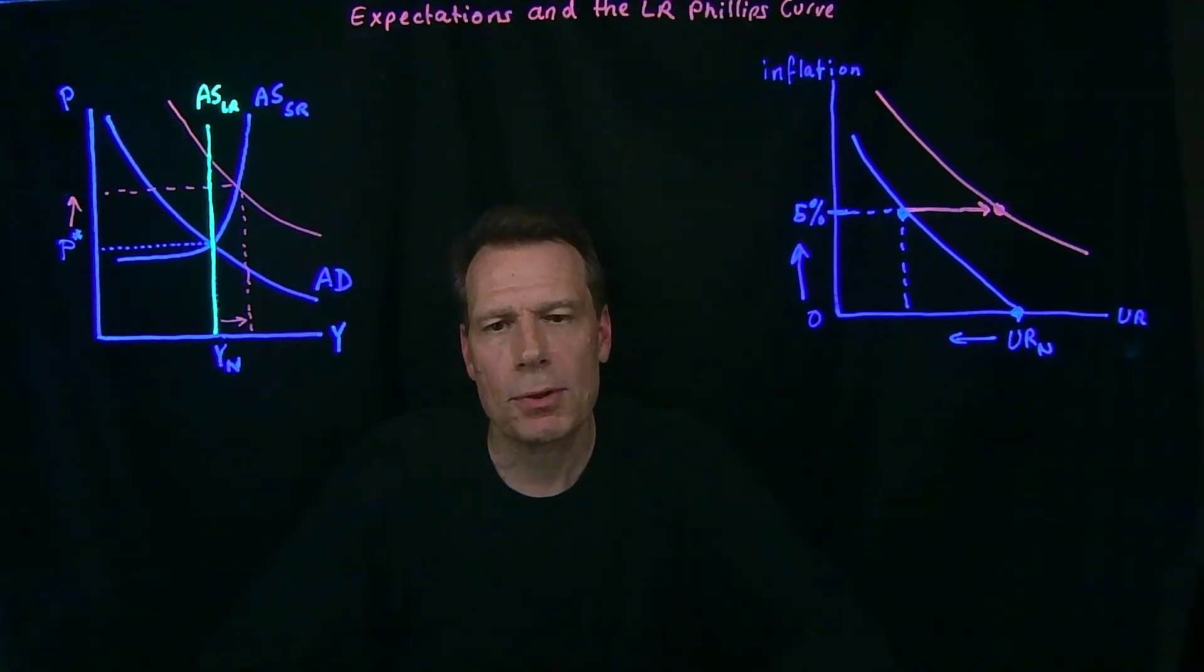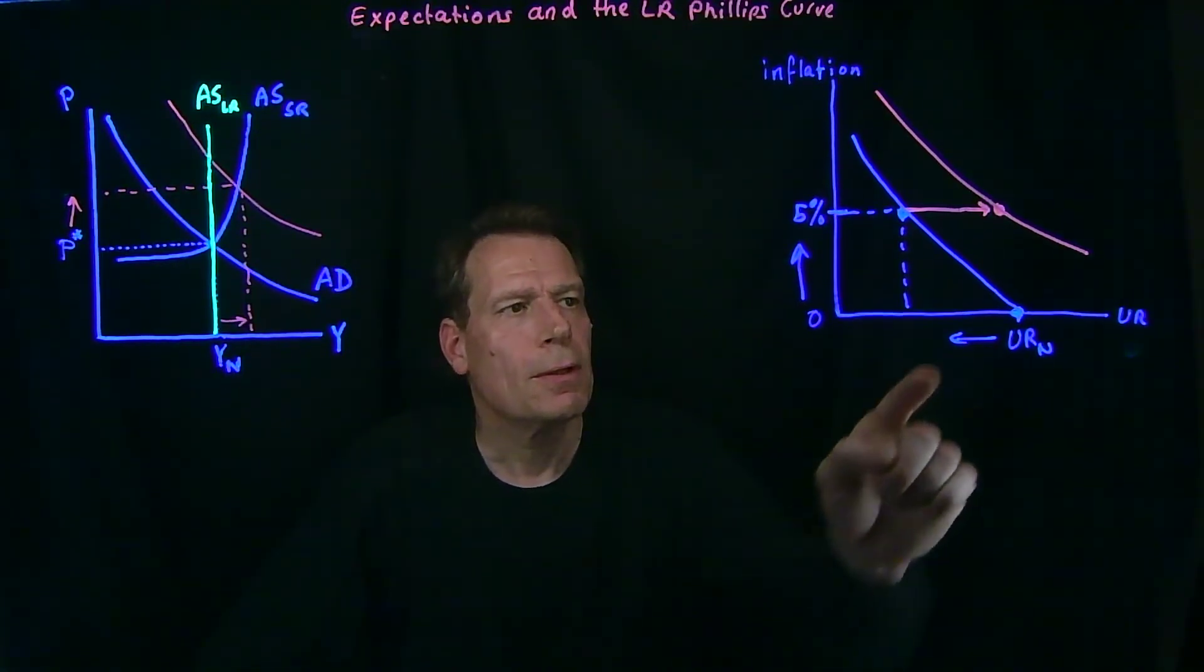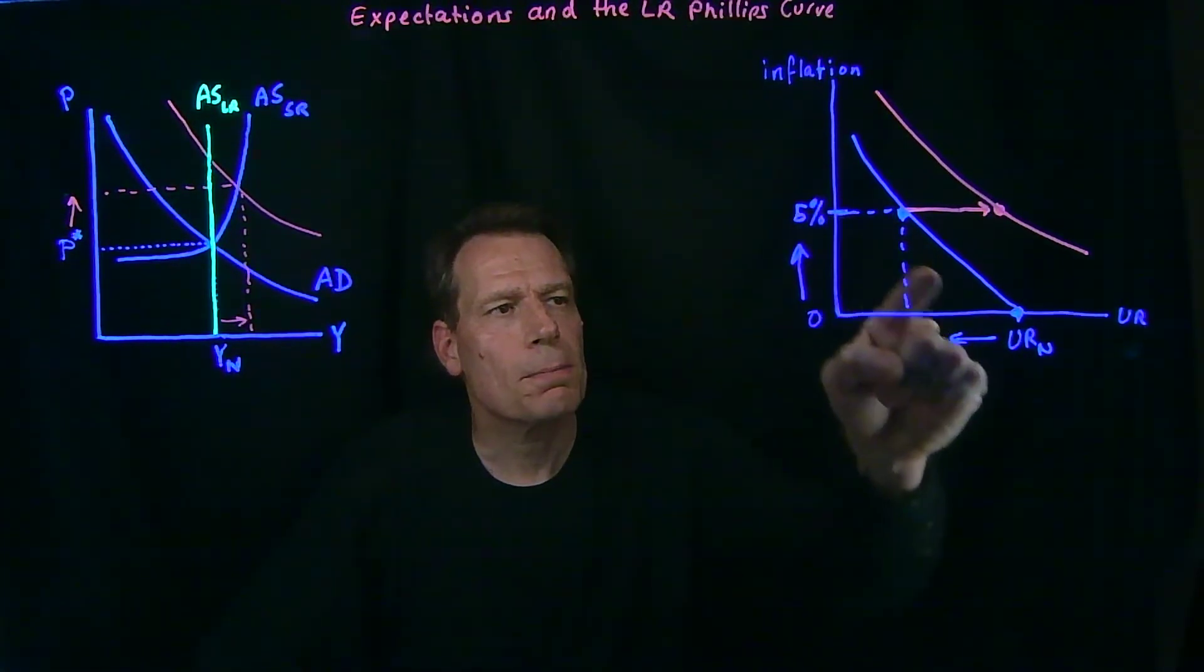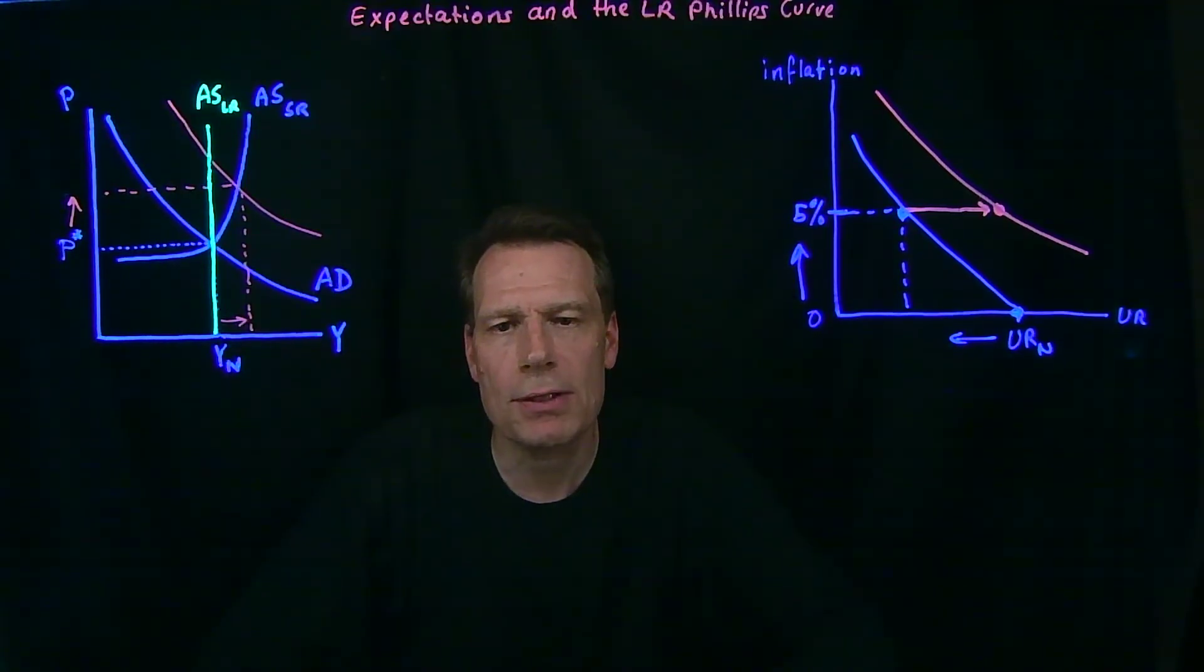These are short-run Phillips curves. They apply in the short-run before expectations about inflation change. So, originally we had a 0% expectation about inflation, and so that was the relevant short-run Phillips curve until expectations change.